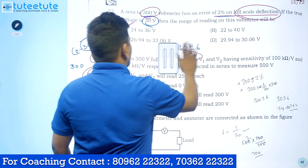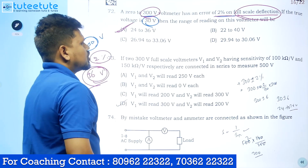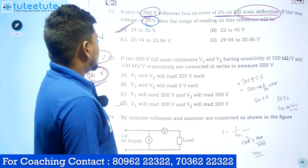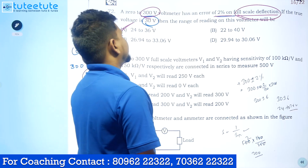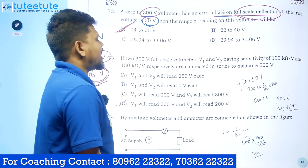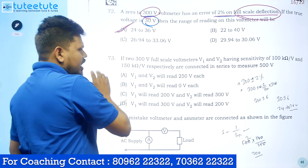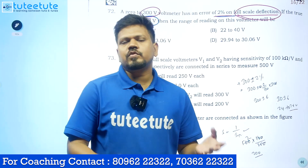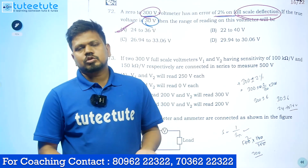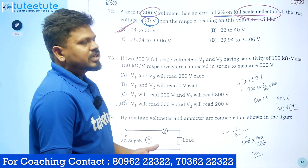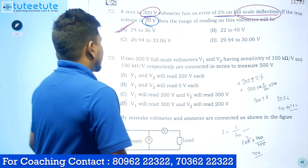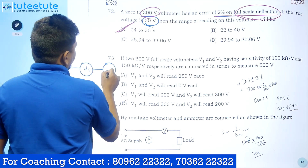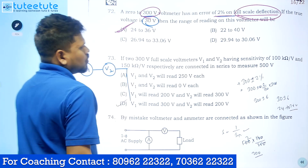The next question: if two 300-volt full scale voltmeters V1 and V2 have sensitivity of 100 kilohms per volt and 150 kilohms per volt respectively, and are connected in series to measure 500 volts — this question directly came from our previous explanations. Let's see: two voltmeters connected in series to measure a total voltage of 500 volts.